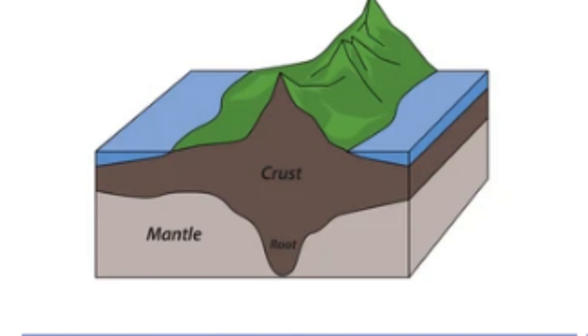This equilibrium is maintained by the buoyancy of the lithosphere, which floats on the denser, underlying asthenosphere. Isostasy is the reason why mountains and other large landforms do not sink under the weight of their own mass.